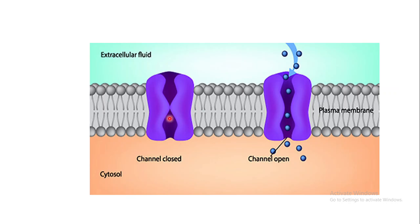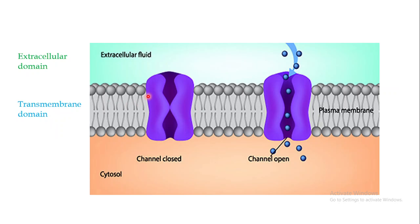This is the structure of an ion channel, and as I've told you, these are transmembrane proteins. Transmembrane proteins have three domains. The first domain, present outside the cell membrane, is known as the extracellular domain. In the case of ligand gated ion channels, this extracellular domain is responsible for the binding of the ligand. The second is the transmembrane domain — the part of the protein present inside the cell membrane. Then you have the intracellular domain, which is present inside the cell. This is what the term transmembrane means: it spans the membrane from exterior to interior.